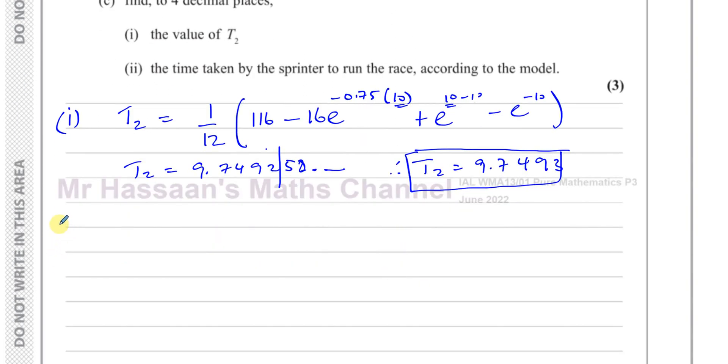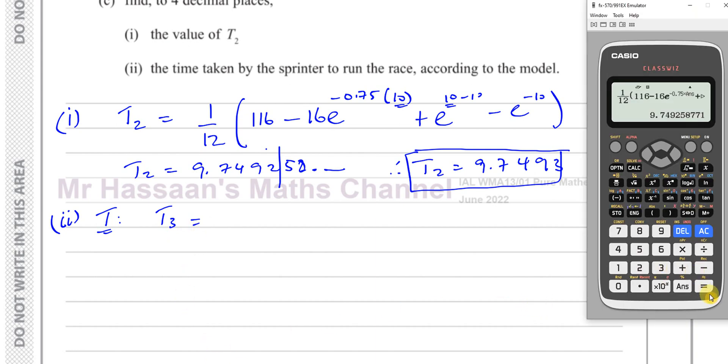Now for part 2, it says find the time taken by the sprinter to run the race, which is basically the accurate value of T, as accurate as you can, or accurate to 4 decimal places. So what I'm going to do is I'm going to find what T_3 is. And all I have to do to find T_3 now is to press equals here. Because where it says answer now, the answer is T_2. This is the answer in the calculator. So when I press equals again, it's going to substitute this wherever I have answer in this expression. So instead of having to type it all over again with this value, I can just press equals and it's going to give me T_3.